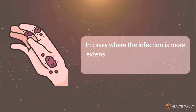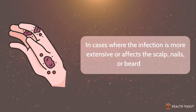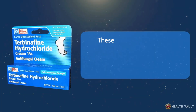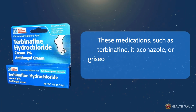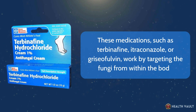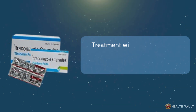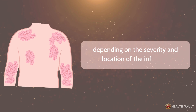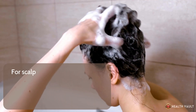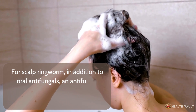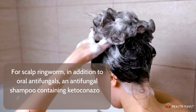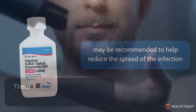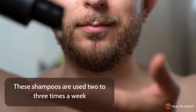In cases where the infection is more extensive or affects the scalp, nails, or beard area, oral antifungal medications may be necessary. These medications, such as terbinafine, itraconazole, or griseofulvin, work by targeting the fungi from within the body. Treatment with oral antifungals typically lasts for several weeks to several months, depending on the severity and location of the infection. For scalp ringworm, an antifungal shampoo containing ketoconazole or selenium sulfide may also be recommended to help reduce the spread of the infection, used two to three times a week.